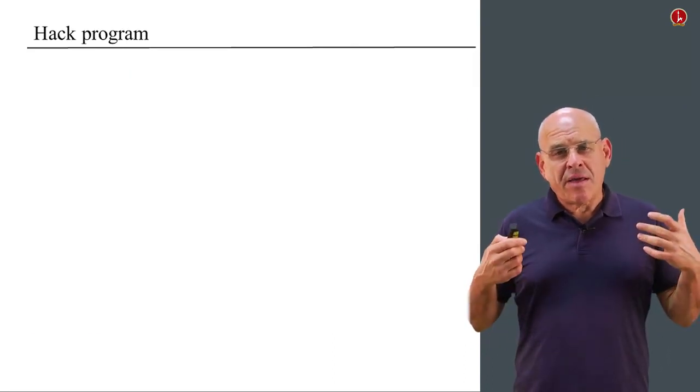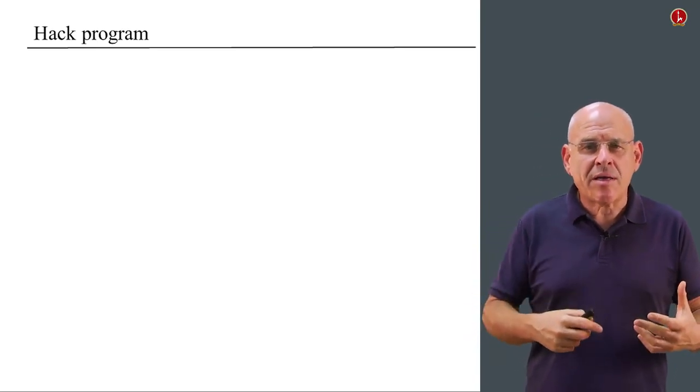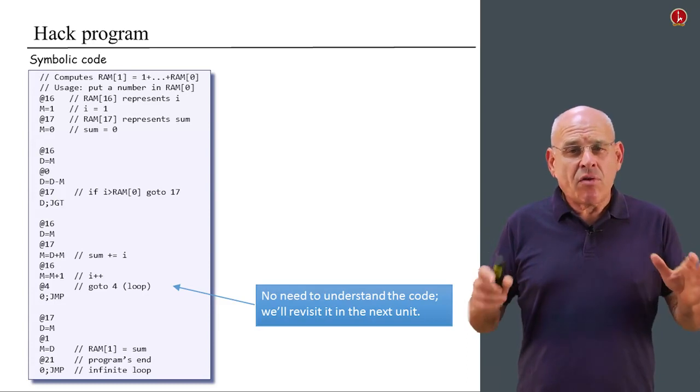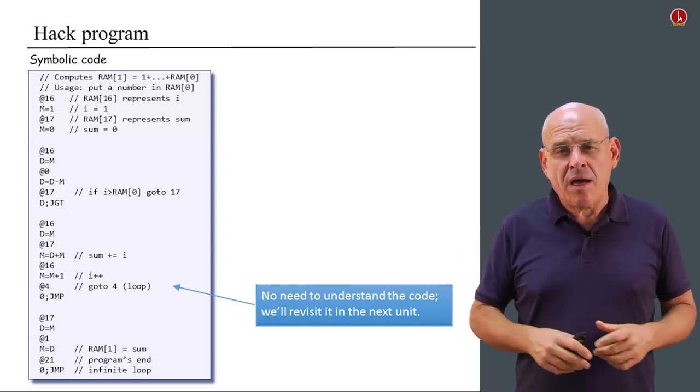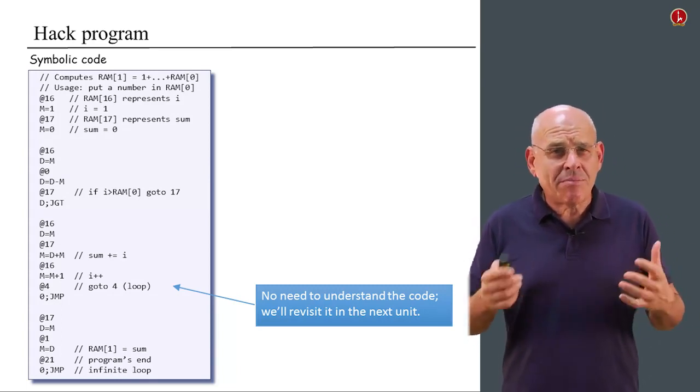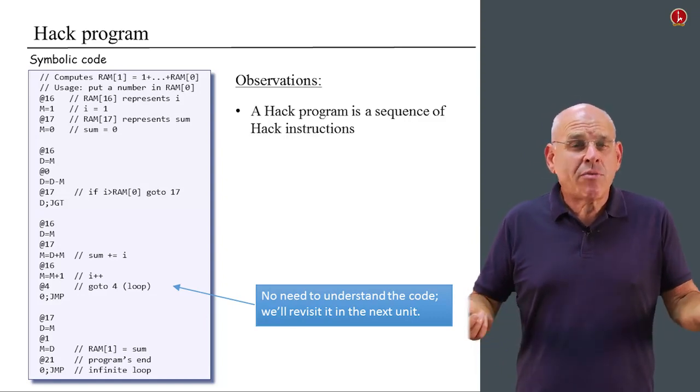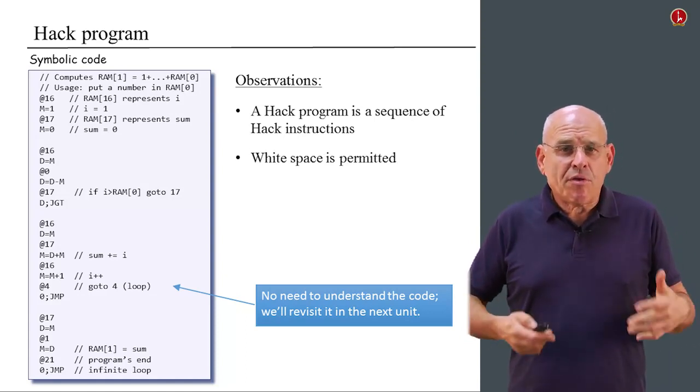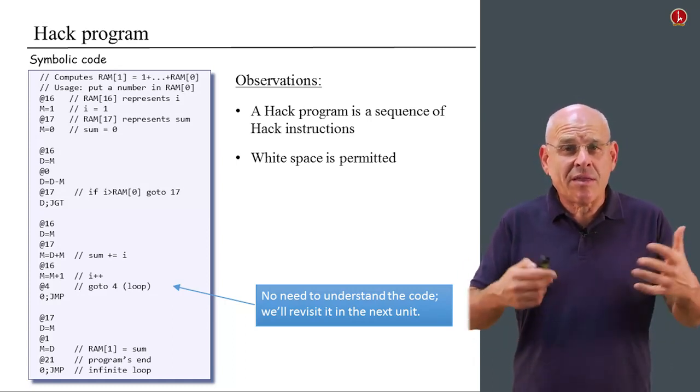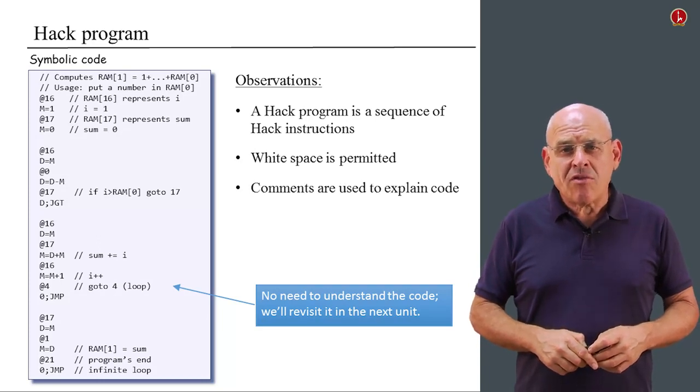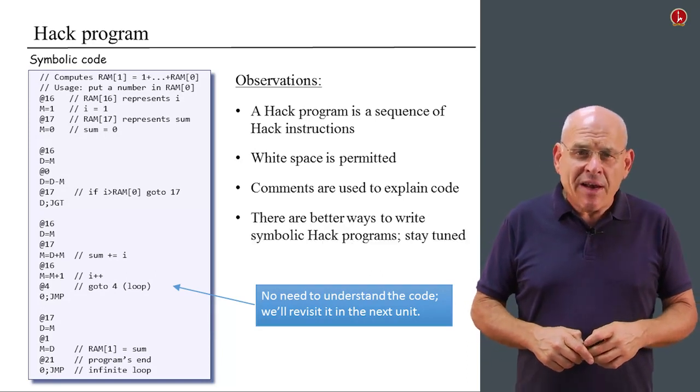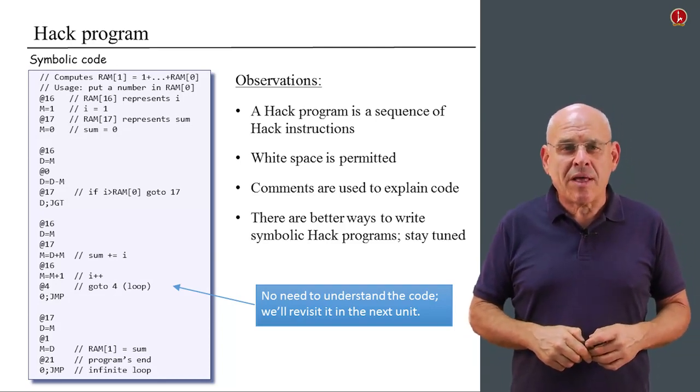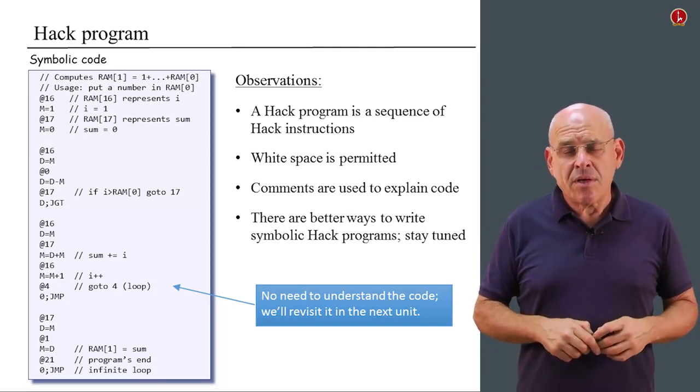So, now that we understand how the specific instructions look like in both binary and symbolic, let's move on and talk about the overall concept of a Hack program. Here's an example of a Hack program. At this level of the course, you don't have to understand the program. We're just giving you a first overview of how a program looks like. And we can make some quick observations. You know, first of all, a Hack program is a sequence of Hack instructions. This program is written using symbolic instructions. White space is permitted. You can throw in empty lines wherever you want if you think that it improves the readability of the program. And comments are welcome and can be used at will.